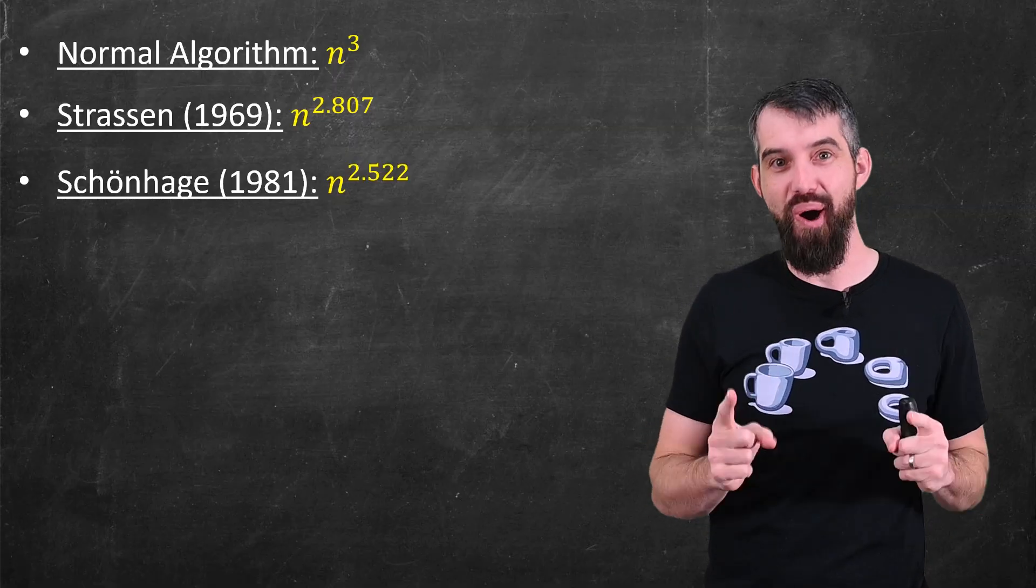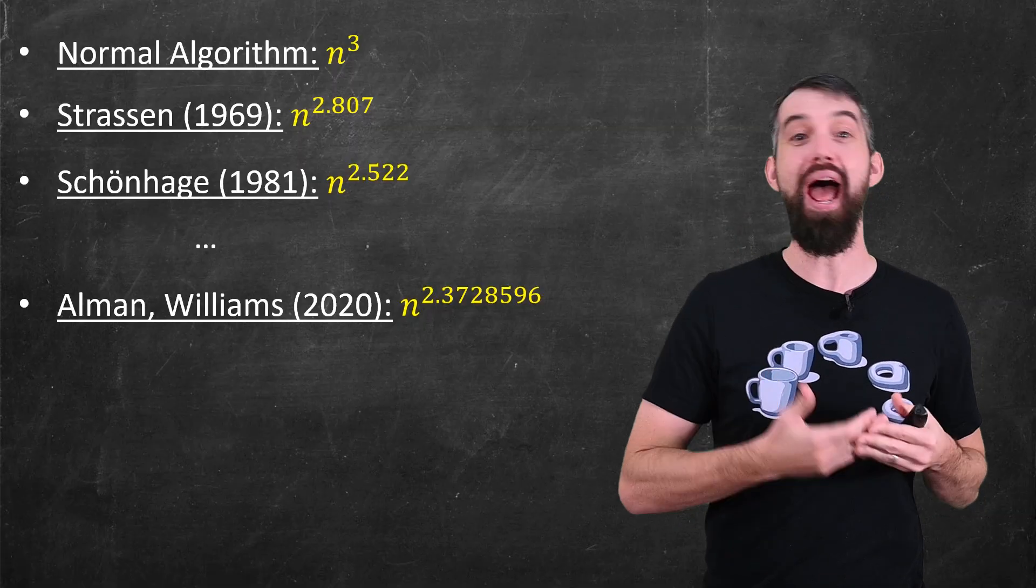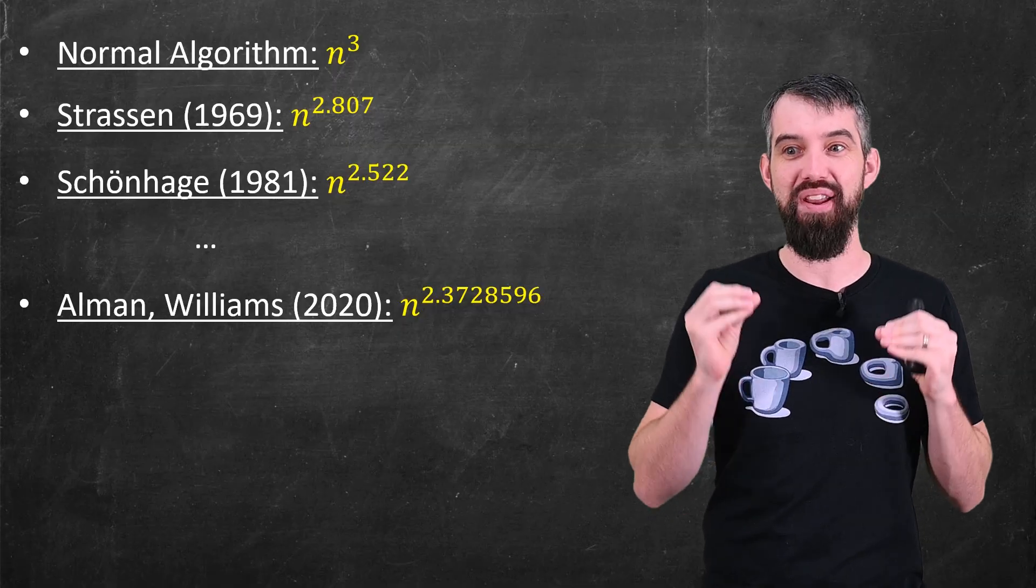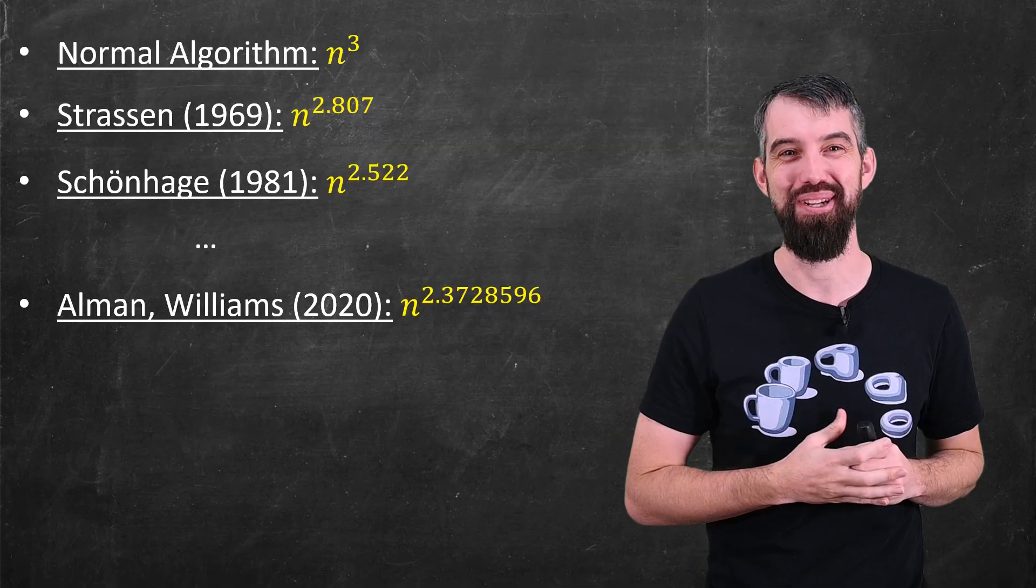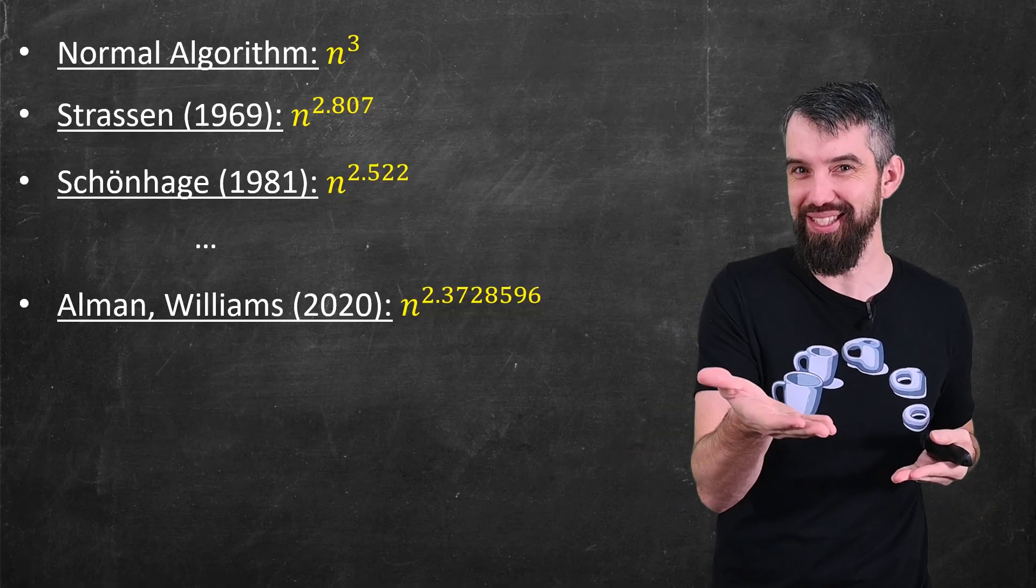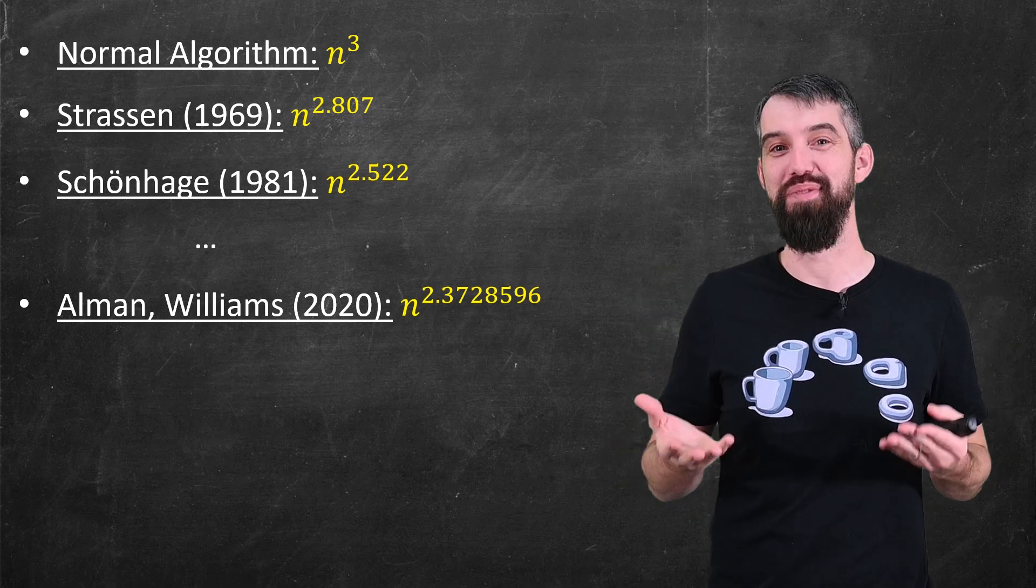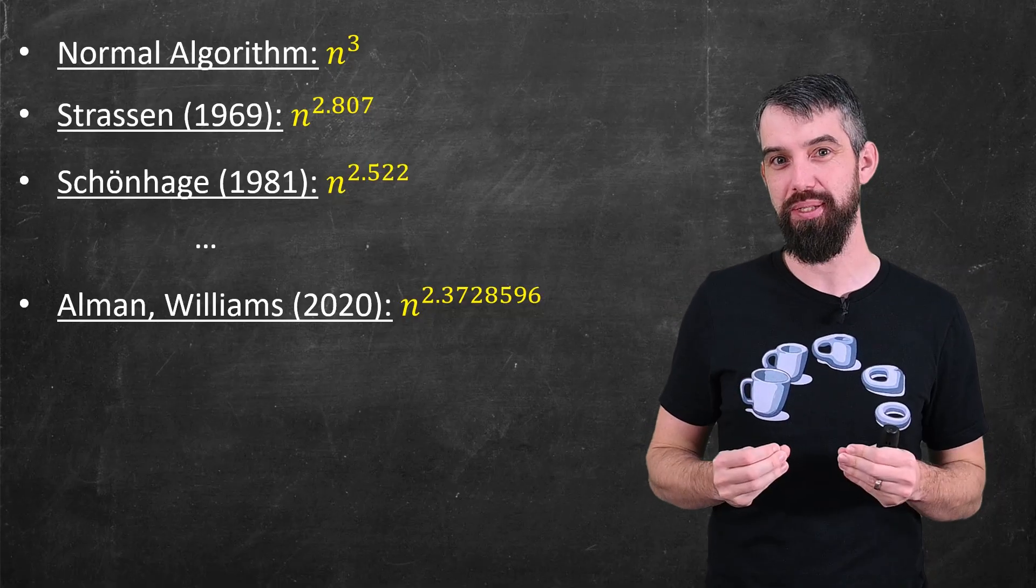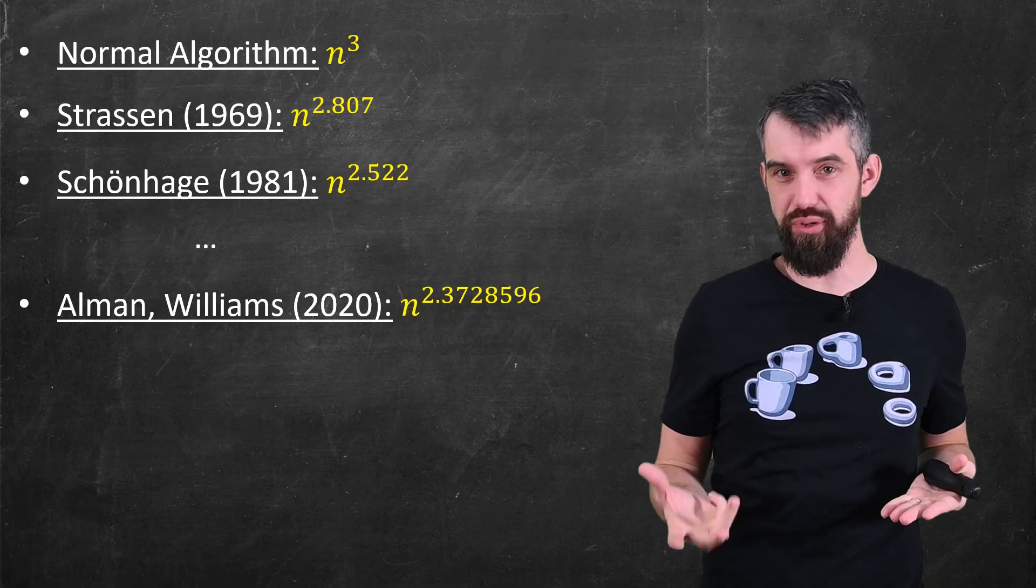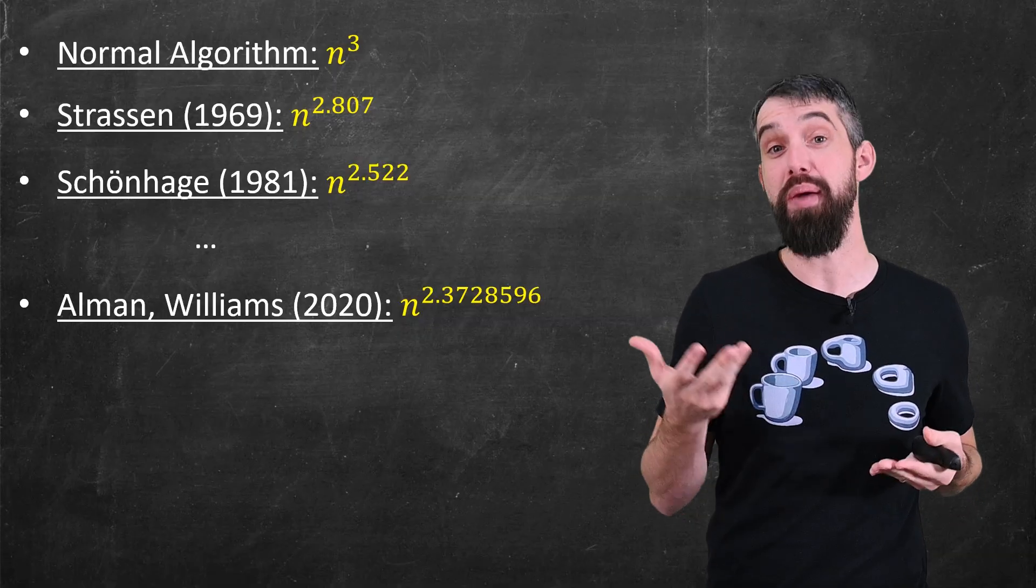And these people went on and on and on doing better and better versions of this laser method until 2020, when Allman and Williams managed to get the currently the best number 2.3728596. I had to look at my screen to remember what that was. Actually, Williams is kind of cool because she had previously been the record holder, she got beaten, and then she beat her own result again and sat back on the top of the crown of vast matrix multiplications. These numbers might look like small improvements, but remember that when we're talking about vast matrices and large amounts of computational time needed to them, even a small change in this exponent can make a really big difference.